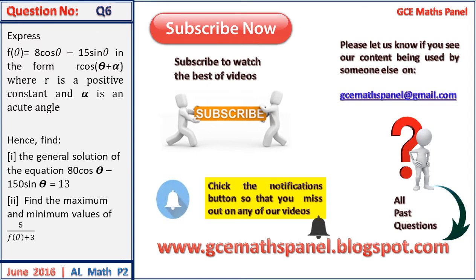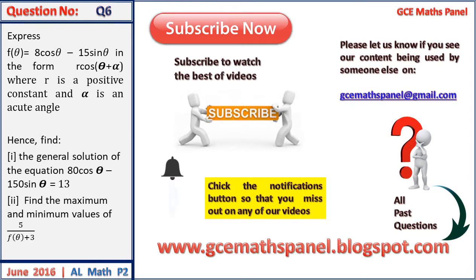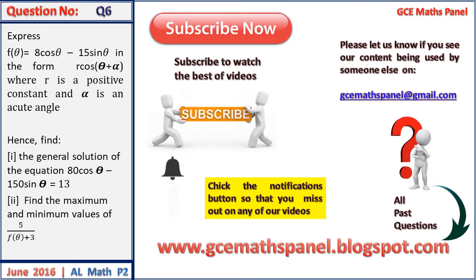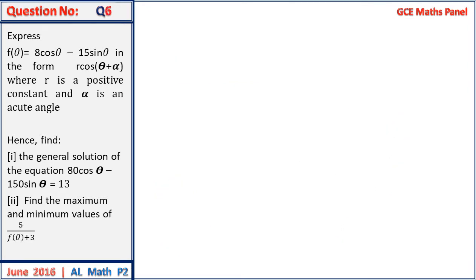You can visit us using our blog jcmathpanel.blogspot.com. Express f(θ) = 8cosθ - 15sinθ in the form L·cos(θ + α), where L is a positive constant and α is an acute angle. Hence find the general solution of the equation 8cosθ - 15sinθ = 13, and find the maximum and minimum value of 5 on f(θ) + 3.